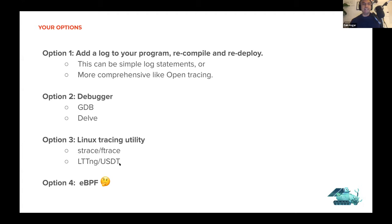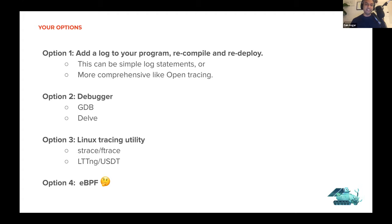Things like USDT — user space static trace points — are used for monitoring things like garbage collection events on the JVM, which are pretty stable things you can attach probes to. The fourth option is using something like eBPF, which is a pretty new technology. We will talk about what eBPF is and see how it can be used in this context.